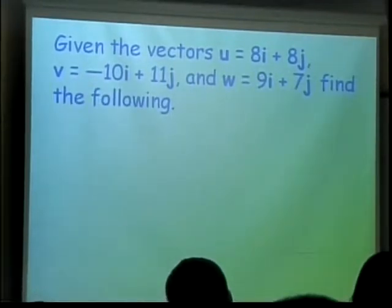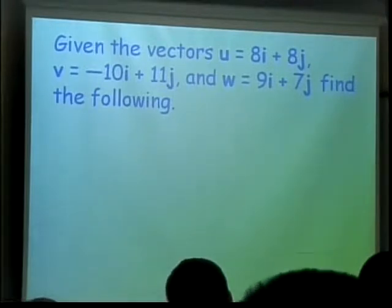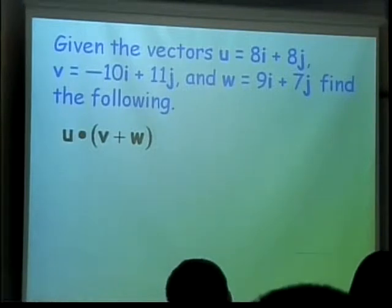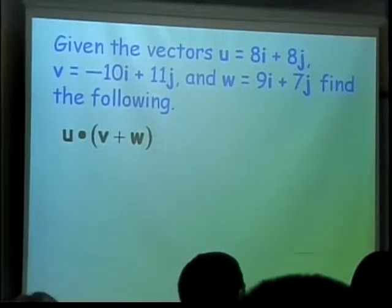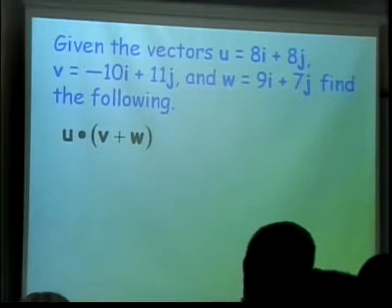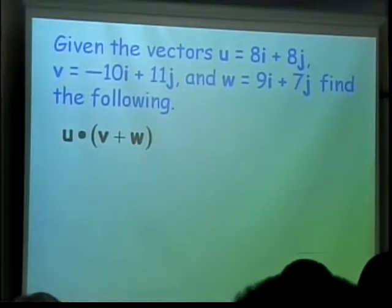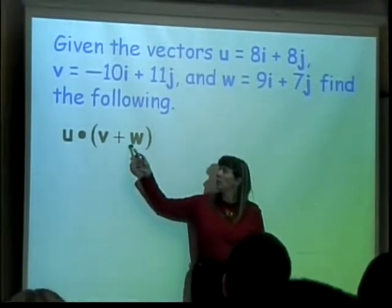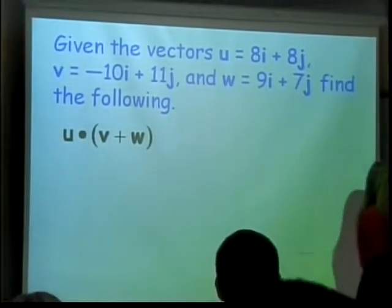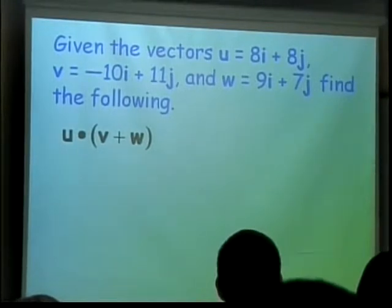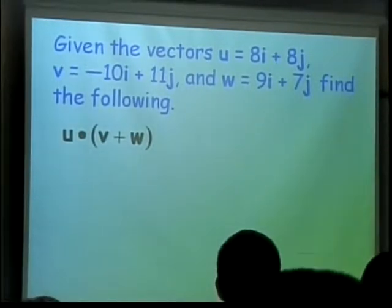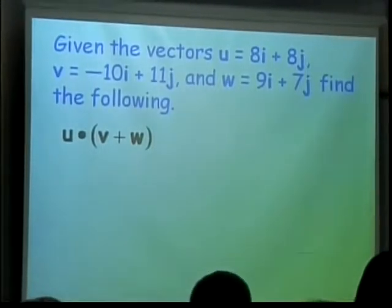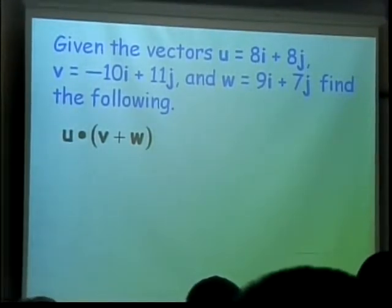We got three vectors this time. We're checking to see if this is associative. Or no, it's distributive. That's the word I want. If we can distribute the dot product through. What do I have to do first when calculating u·(v+w)? I have to add v and w first. So I just need to put my w up here. w is 9i plus 7j.